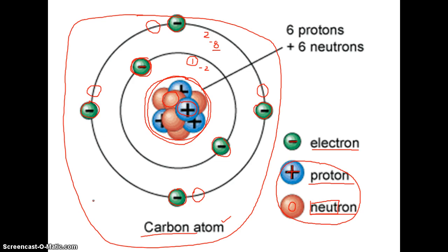That's what makes carbon such a fundamental element of life — because it's missing these four electrons. The electrons, as you'll see in the next couple of slides, are what dictate the way one atom interacts with or behaves when other atoms are around. Because carbon is missing these four electrons in its outermost shell — its valence shell — it interacts in some interesting ways when other atoms are around.